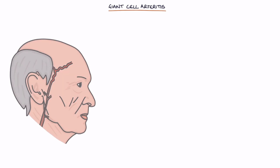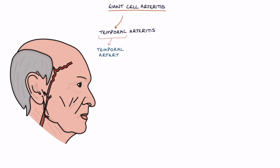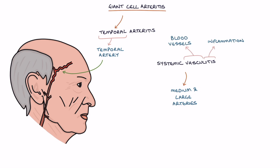Giant cell arteritis, or GCA, is also known as temporal arteritis as it often affects the temporal artery. It's a type of systemic vasculitis affecting the medium and large arteries. Vasculitis refers to inflammation in the blood vessels.